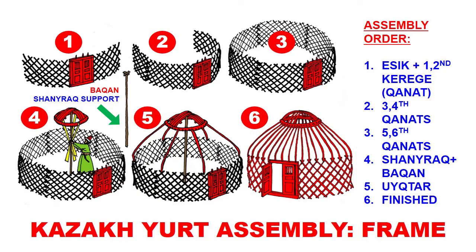The next step is raising the shanrak. Usually the most respected senior person in the family — because raising a yurt was a family occasion — the patriarch would step inside the ring and hold the shanrak with a special pole support called bakan.